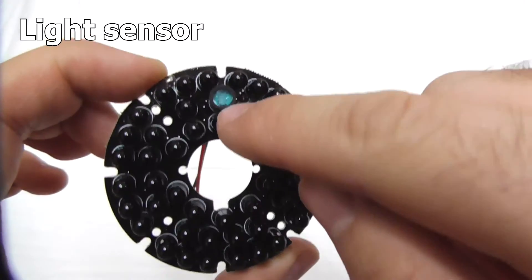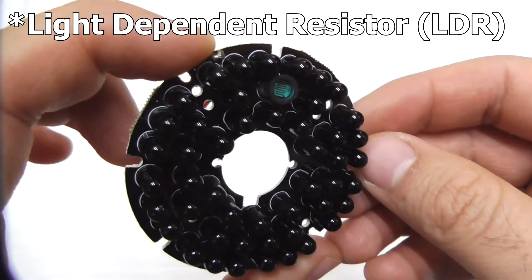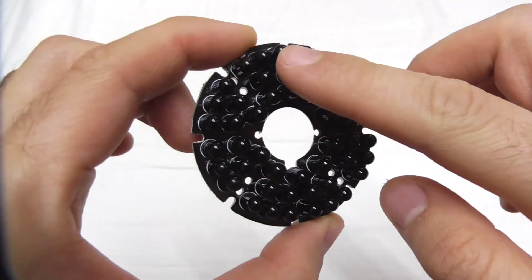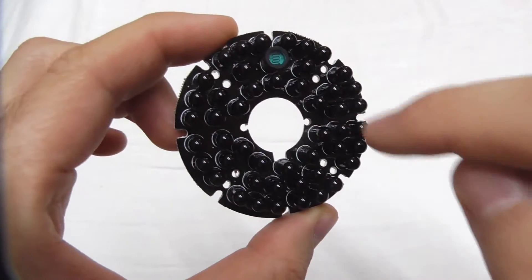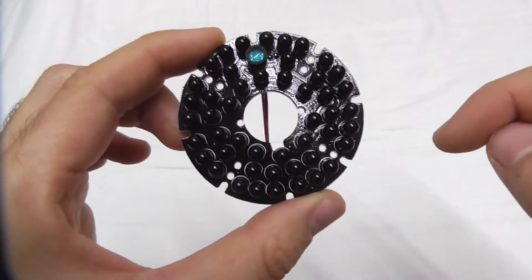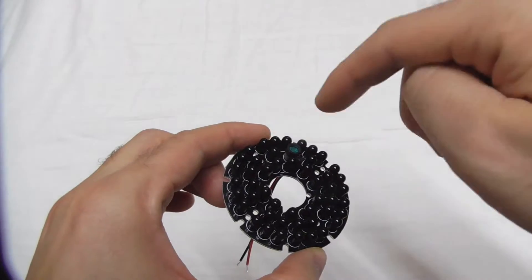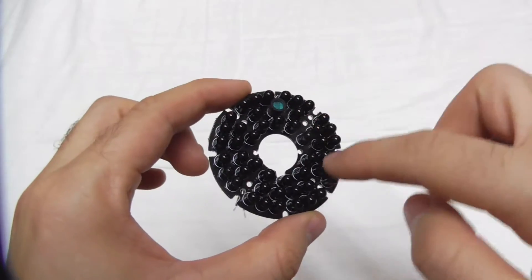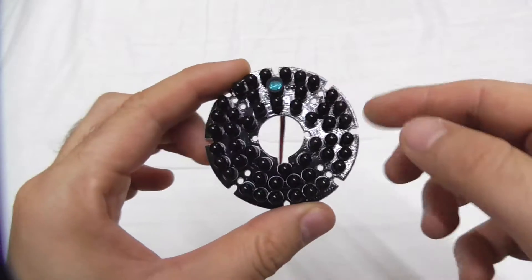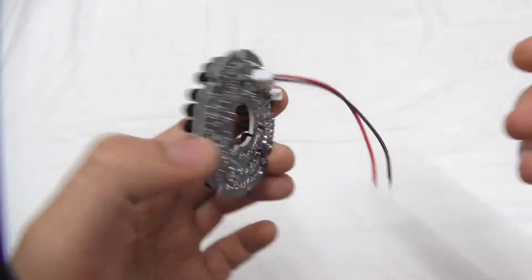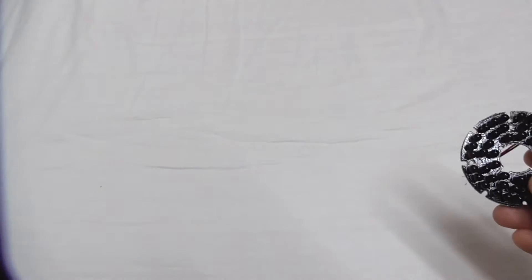It has a light sensor there, a photodiode. If you cover it then no light will enter into the sensor and thus the LEDs will light up. If it has enough light from outside then it will turn off the LEDs. So basically it's turning on at night and turning off at daytime.